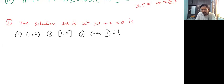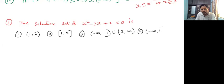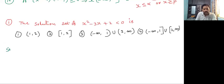...union (2, infinite); and fourth option, (minus infinite, 1] union [2, infinite). Here less than zero symbol is there, so it is not possible to get a closed bracket. So second and fourth options are completely wrong. We can expect first and third.